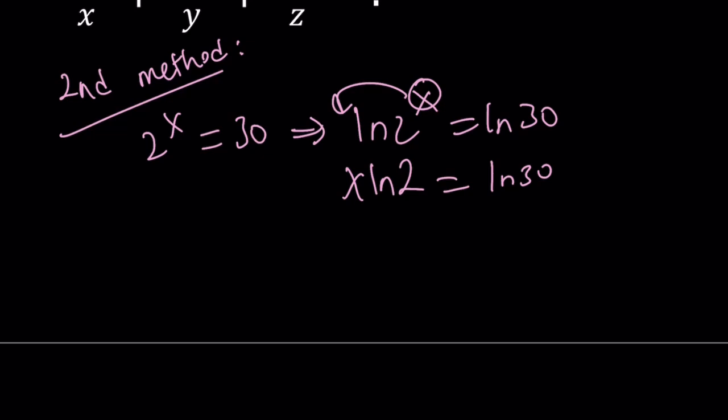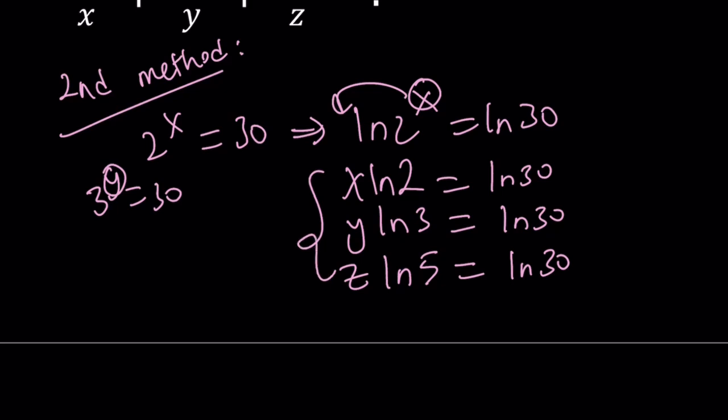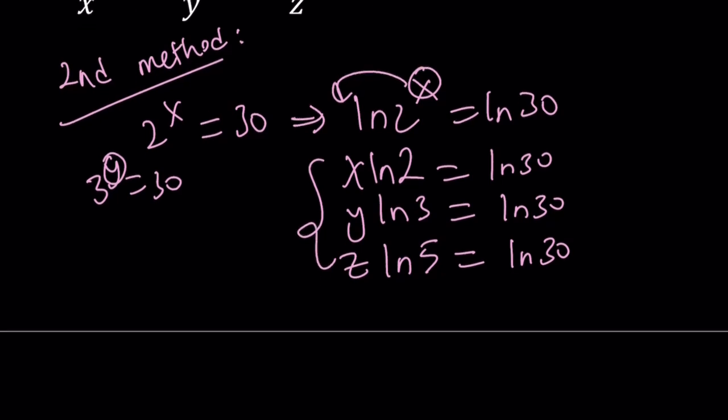And then if you do this with other ones, you're going to get 3 to the power y is 30, and then this is going to give you when you align both sides y ln 3 is equal to ln 30, and then z ln 5 is equal to ln 30. You don't have to remember it, just do it once and then you can copy the pattern. So we get three equations but they're not that interesting.